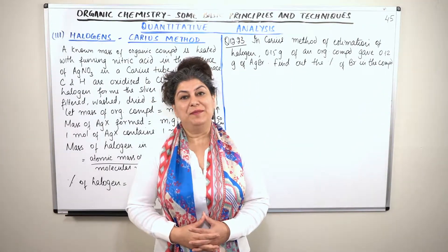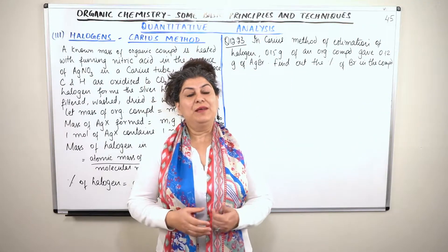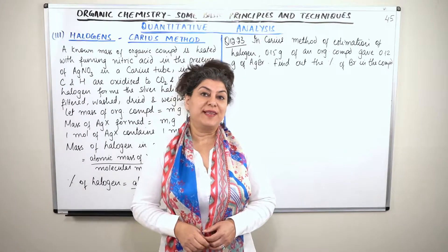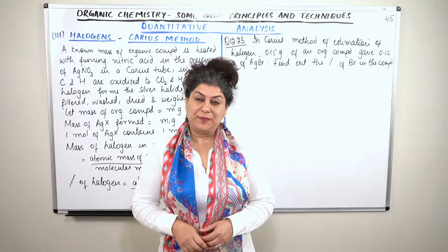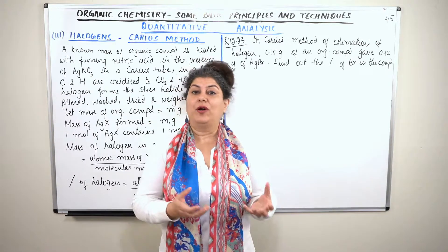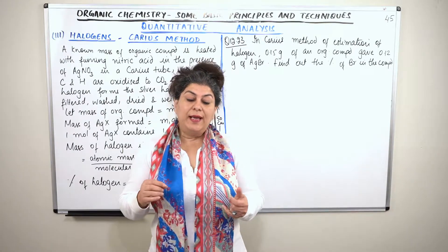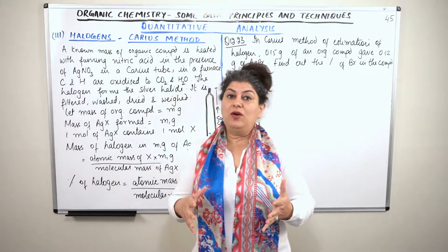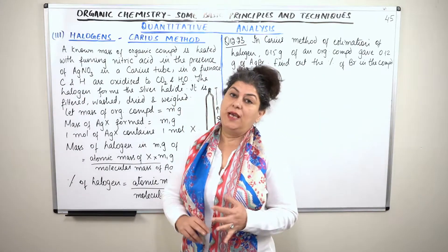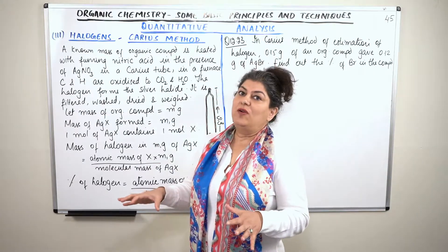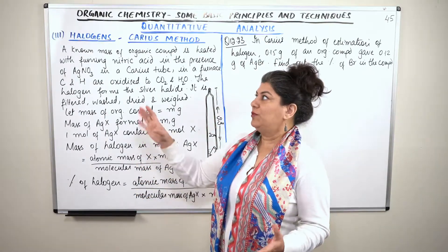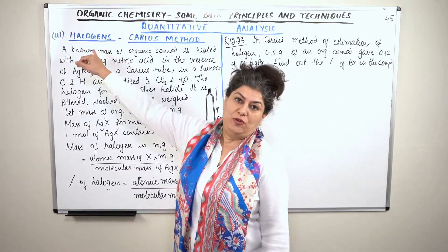Hello, I'm Seema and welcome to part 45 of the chapter Organic Chemistry: Some Basic Principles and Techniques. We have been doing the quantitative analysis of elements in an organic compound, and by now we have done the quantitative analysis of carbon, hydrogen, and nitrogen. So let us now come to the next element — halogens.